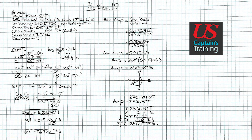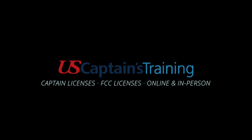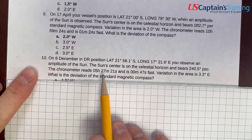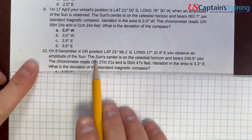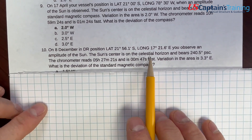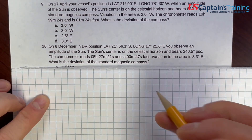Hey, Neil Smith here with U.S. Captains Training. Here we are on Problem 10 — this is the last problem in the amplitude problem set. It's nice and straightforward, and we will run right through it. Let's get started. Practice Problem 10: we're going to calculate the deviation of the compass based on the amplitude of the sun when it's on the celestial horizon.